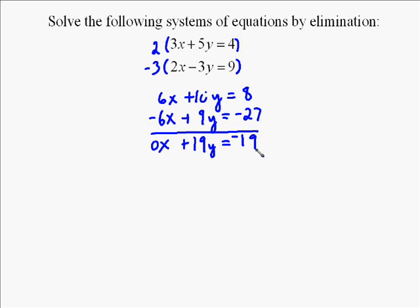So essentially what we have left is 19y equals negative 19. So to solve that, you just divide both sides by 19. So you divide both sides of this equation by 19, and you're left with y equals negative 1.